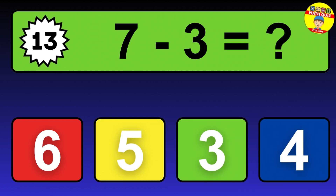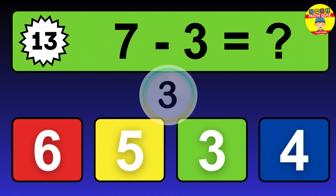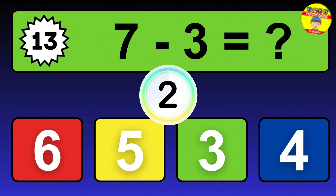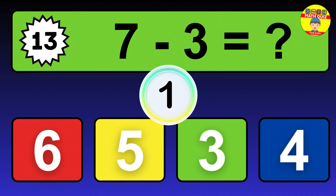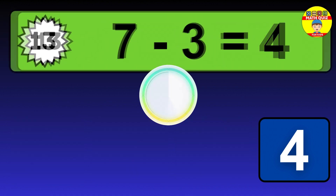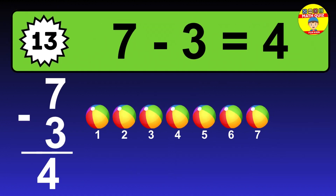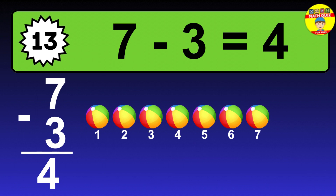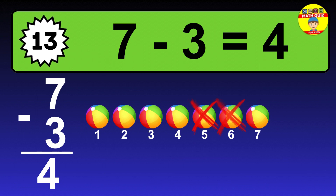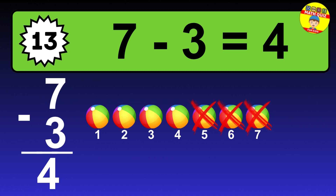Question 13. 7 minus 3 equals what? The answer is 7 minus 3 is 4. Let's count it: 1, 2, 3, 4.